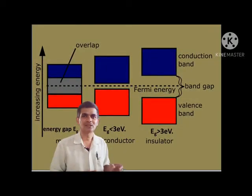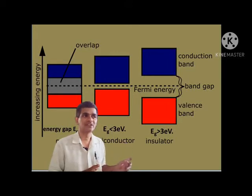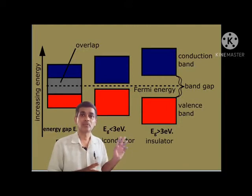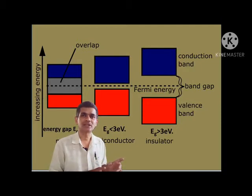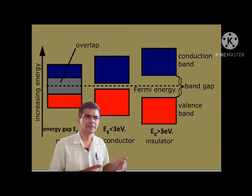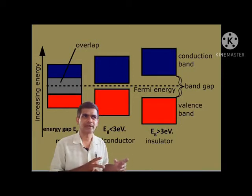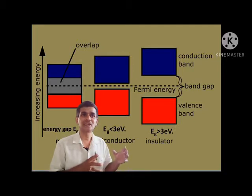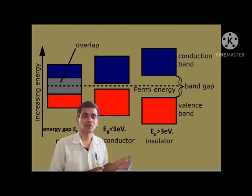To summarize the classification of solids based on band structure: in case of metals, the conduction band and valence band are overlapped, so there is no energy gap. In case of semiconductor, the energy gap is less than 3 electron volts — a narrow gap exists between the valence band and conduction band. In case of insulator or non-metals, there is a wide energy gap between the valence band and conduction band, where that energy gap is greater than 3 electron volts.